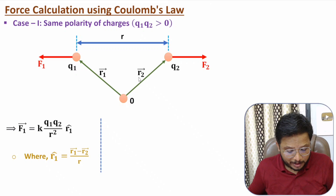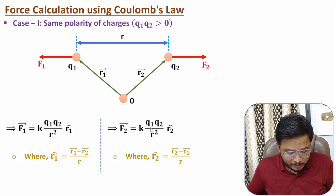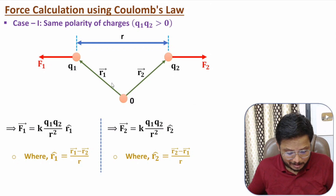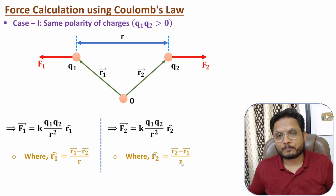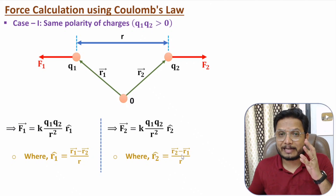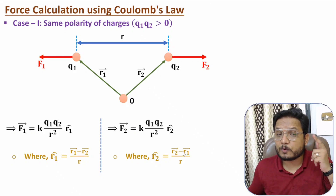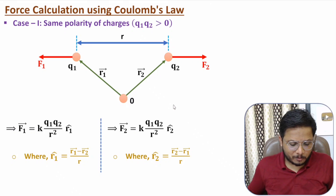Similarly, to find F2, the magnitude is k·q1·q2 / r² multiplied by unit vector r̂₂₁. Here the head is at r2 and the tail is at r1, so unit vector r̂₂₁ equals (r2 − r1) divided by |r|. This is how we can identify force along with direction using Coulomb's law.